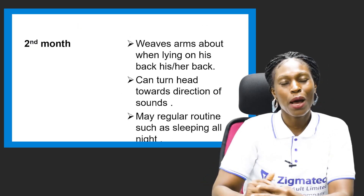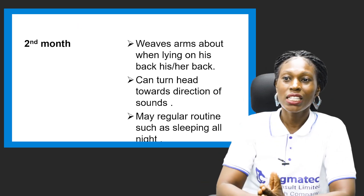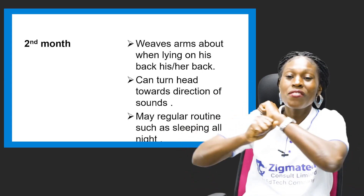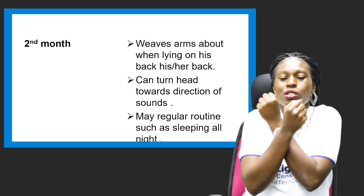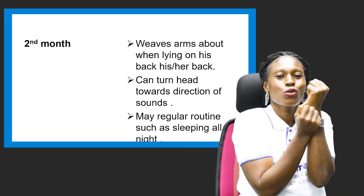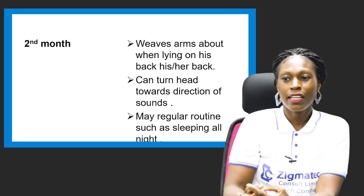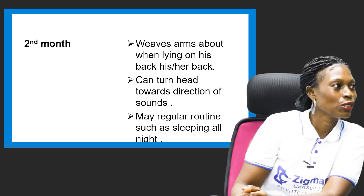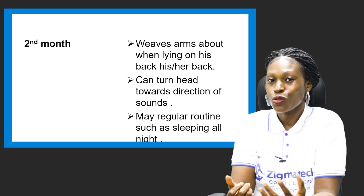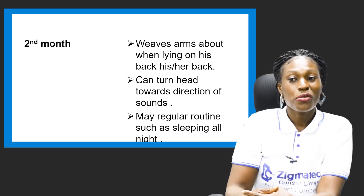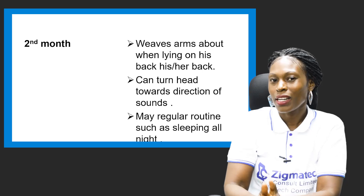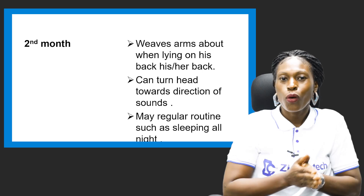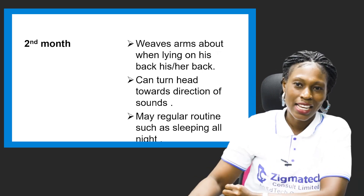At the second month, they can wave their arms about when lying down. They can turn their head towards the direction of sound. When you talk and move this way, they will turn toward the sound. They can also make regular routines such as sleeping all through the night.